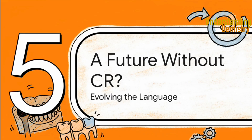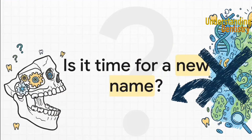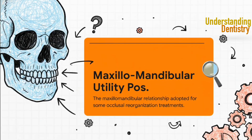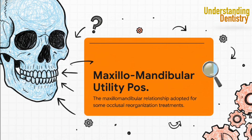It kind of raises a fundamental question: is the term centric relation itself, with all of its historical baggage, still even fit for purpose? The term is so loaded with historical baggage and unproven biological assumptions that some researchers and clinicians are starting to suggest it's just time for a change. A new name could help us finally separate its practical use from its controversial past. One really compelling proposal is the term maxillomandibular utility position. This name is brilliant in its simplicity — it strips away all those biological claims of centricity or idealness and reframes the whole concept based on what it actually does. It's not about finding some perfect anatomical state; it's about adopting a practical, utilitarian jaw relationship for a specific treatment. And that's a definition that both proponents and critics can pretty much agree on.